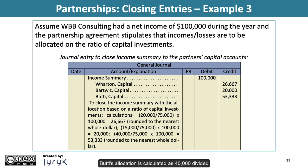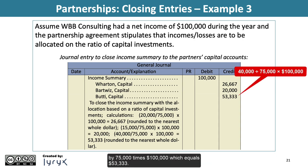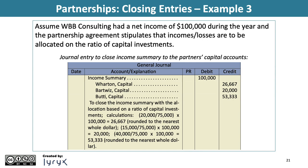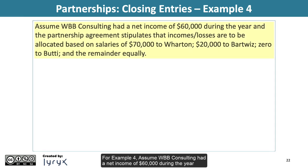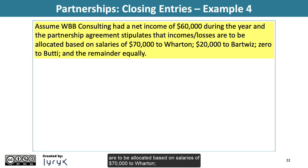Beauty's allocation is calculated as $40,000 divided by $75,000 times $100,000, which equals $53,333. For Example 4, assume WBB Consulting had a net income of $60,000 during the year and the partnership agreement stipulates that income and losses are to be allocated based on salaries of $70,000 to Wharton, $20,000 to Bartwiz, zero to Beauty, and the remainder equally.